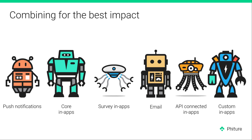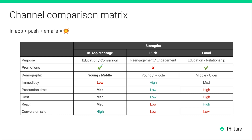We have all of our robots in one place, as we believe combining all of these different CRM channels and types of in-apps is the best way to create the highest impact. If you're unsure which CRM channel is most appropriate for a particular campaign, we've created a handy table to help you understand the pros and cons of each channel. For example, if you've got a promotion that expires after 24 to 48 hours, in-apps may not be the best channel and push or email could be more appropriate.